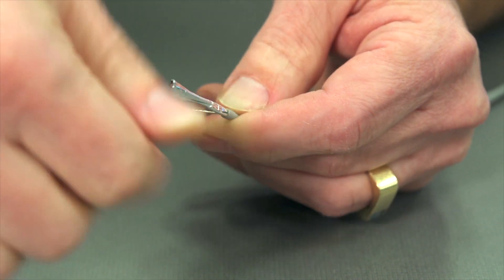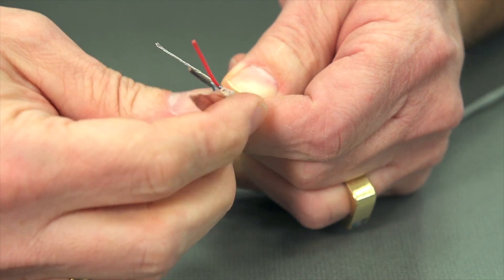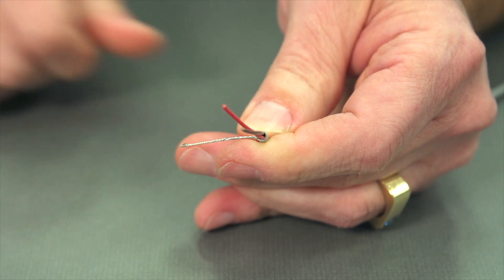And then we'll pull the shield away. This mylar shield. And it pulls right off. If it doesn't get all the way off you can use your scissors to trim that.